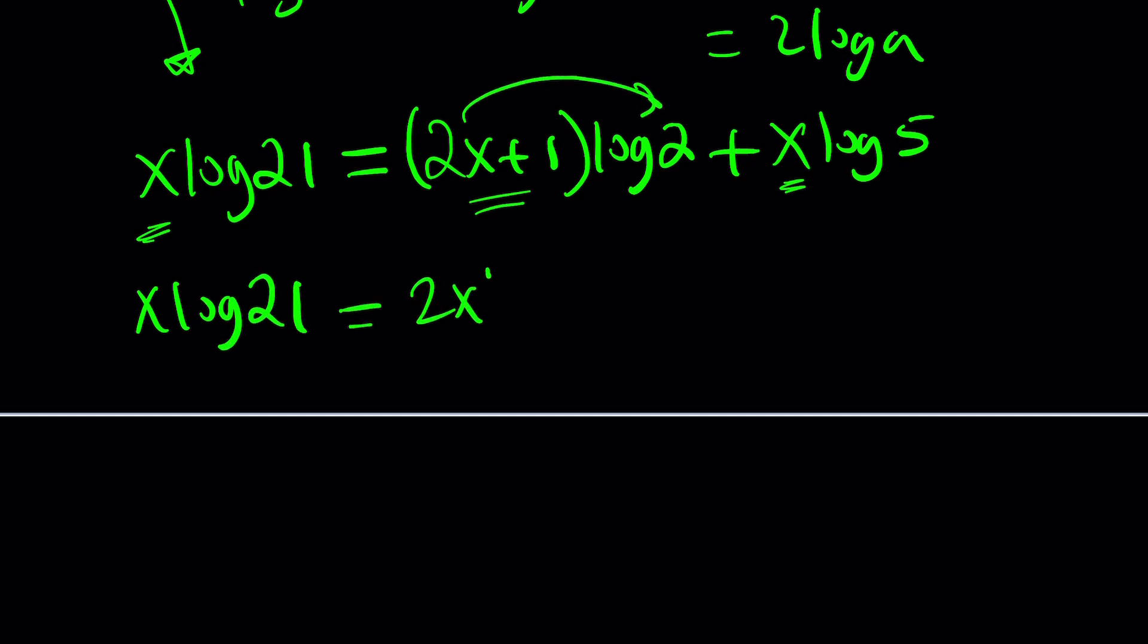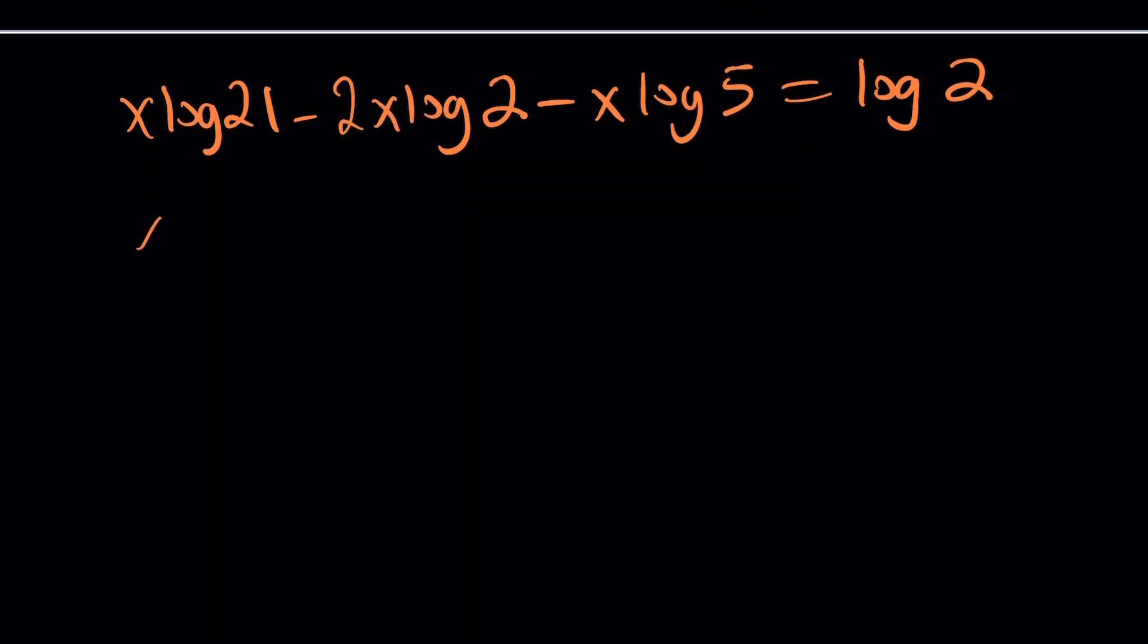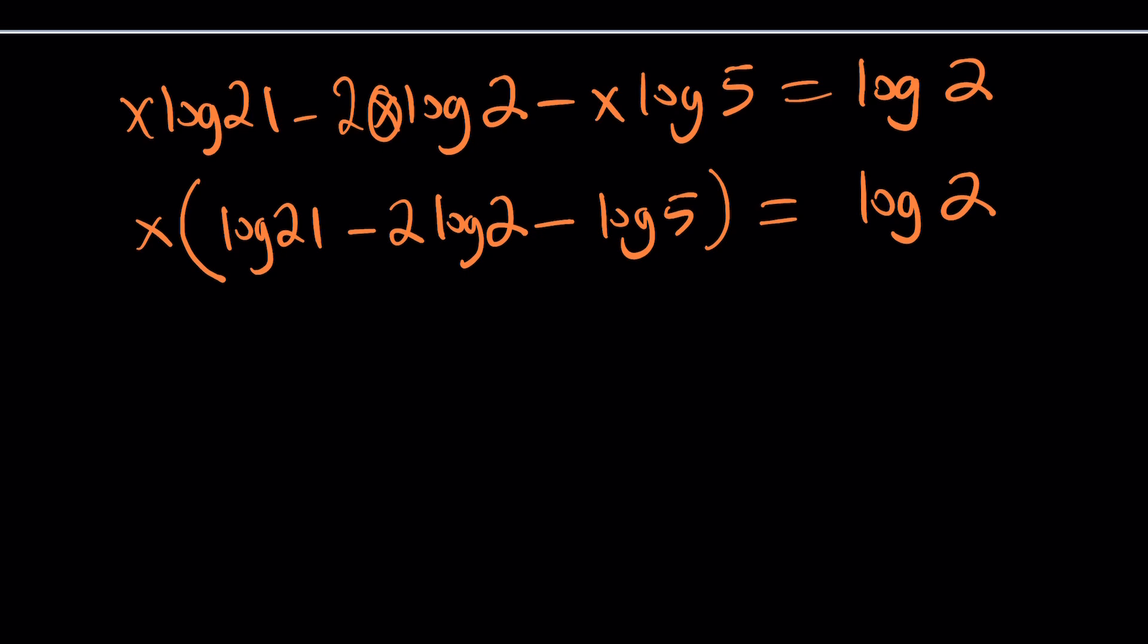Now, I'm going to go ahead and distribute this to X log 2 plus log 2 plus X log 5. Notice that this is the only term that does not contain an X. So we're going to leave it on the right-hand side and bring everything else to the left. We're going to get X log 21 minus 2X log 2, I'm going to factor out the X, minus X log 5 equals log 2. Now, X is a common factor, so let's go ahead and factor it out. We get log 21 minus 2 log 2 minus log 5, and that is equal to log 2.